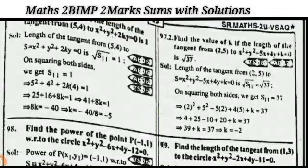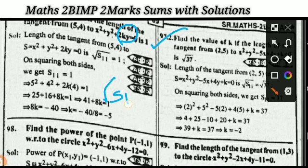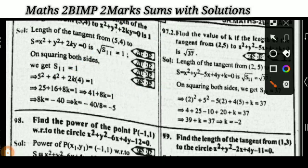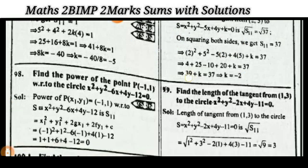Next: find the length of the tangent from (5, 4) to the circle — a very important two-mark question. The formula for length of tangent is √S₁₁. If the length of the tangent is given as 1, equate √S₁₁ = 1 to find k. Similarly, if the length of the tangent from (2, 5) to the circle equals √37, equate √S₁₁ = √37.